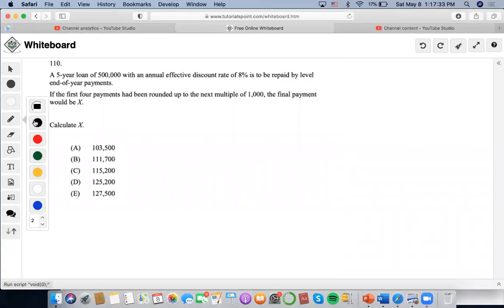Okay, so for this problem, it says that a five-year loan of $500,000. So again, future value, present value concept, dealing with loans. With an annual effective discount rate of 8%, it's to be paid by level end-of-the-year payments. It's a five-year loan, it's already annual, so we don't have to convert the years.